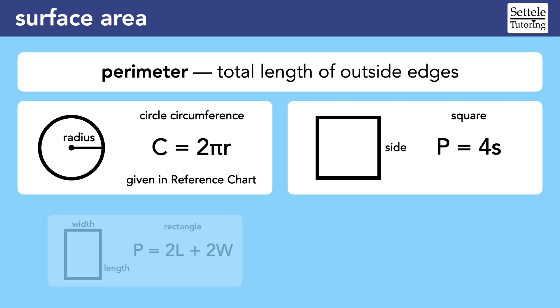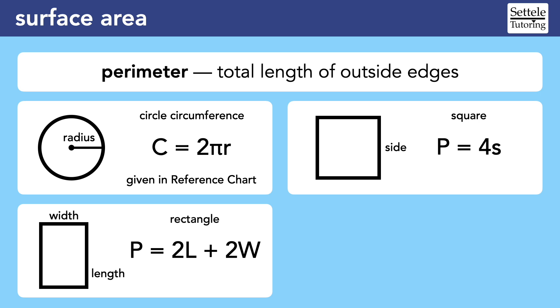Similarly, some people memorize the formula for the perimeter of a rectangle as twice the length plus twice the width. But is it really that hard to just look at a picture of a rectangle and get the perimeter by adding the sides?